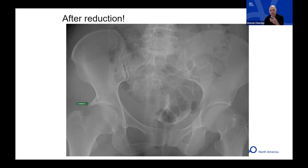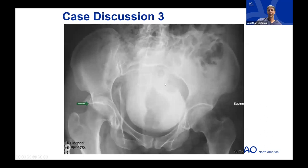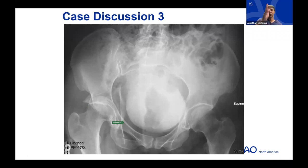Looking at the Judet oblique views to confirm the diagnosis: the iliopectineal line is intact, confirming only one column is involved — the posterior column. Will notes that the hallmark here is the intact iliopectineal line — it's purely a one-column injury. Once you confirm that and see the posterior wall fracture, you don't need to go through the full algorithm. Diagnosis is posterior column posterior wall, and now the focus is surgical planning and looking for subtle details on CT.